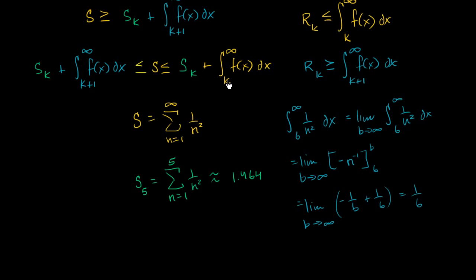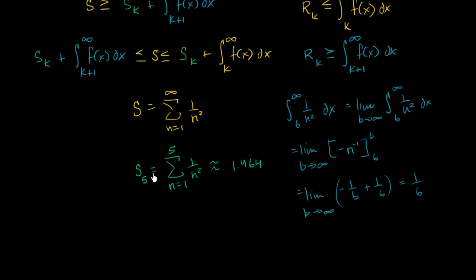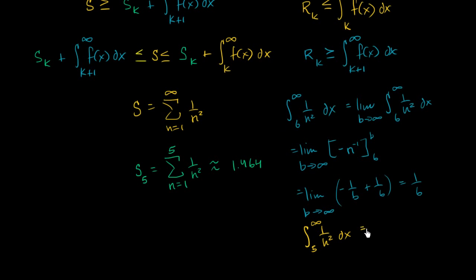We can use that exact same logic to evaluate the other integral. The improper integral from five to infinity of one over n squared dx — the only difference between these two integrals is the bottom bound. This was one over six for the lower bound of six, so by the same arguments, this one is going to be one over five.